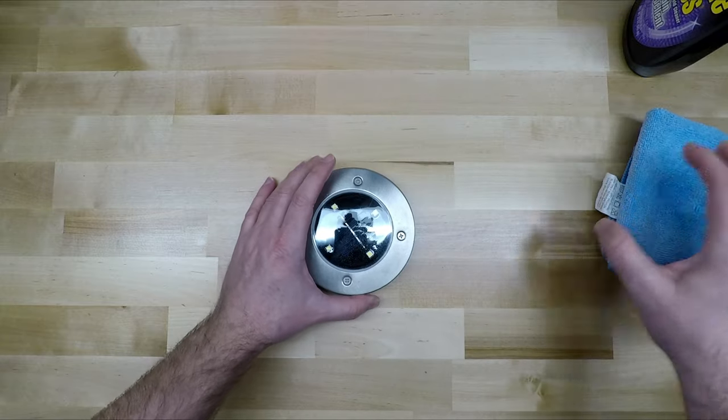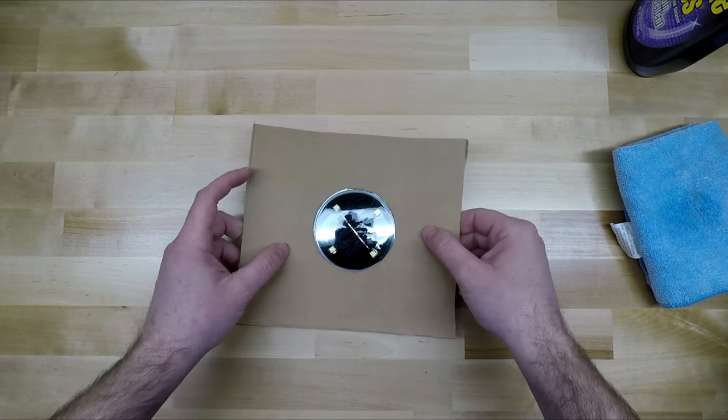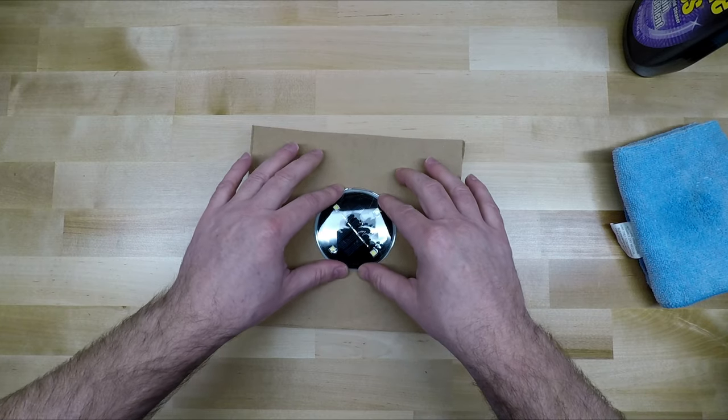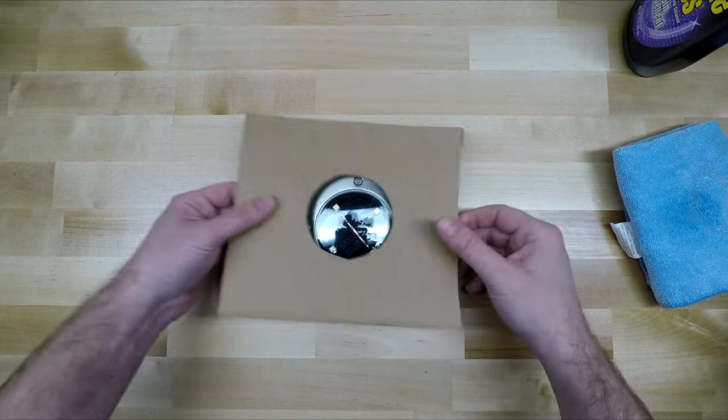And then what I did is I made a template out of cardboard just to put on there. Of course, that's going to depend on your solar panel size and shape that you're going to use, but just to prevent any overspray.